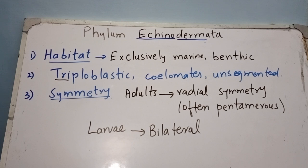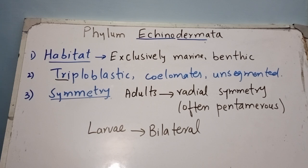Regarding symmetry, adult echinoderms show radial symmetry, meaning the body can be cut into two equal halves by more than one plane. Some, like brittle stars and starfishes, have pentamerous symmetry — their body can be divided into two equal parts by five planes ('penta' means five).